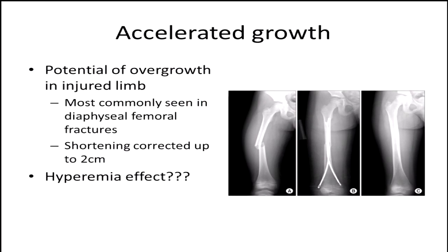Accelerated growth is most commonly seen in diaphyseal femur fractures. In a transverse femur fracture in a pediatric patient treated with elastic nails, you can see that once they're healed, they tend to lengthen — so even shortening up to two centimeters can sometimes be corrected. Some of the reasoning for this has been attributed to the hyperemia effect: as fractures break, there's increased blood flow to heal the fracture, and once healed, the bone gets stimulated and can sometimes overgrow.